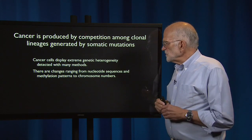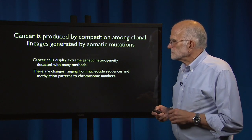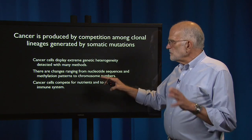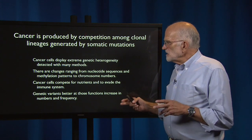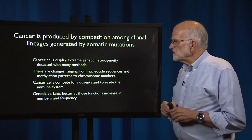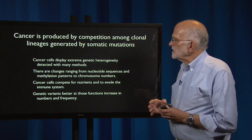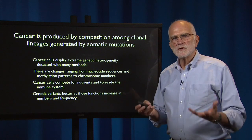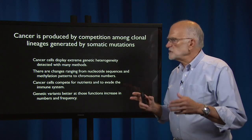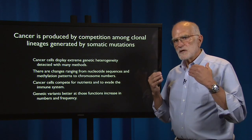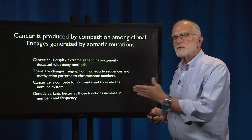Cancer is produced by competition among clonal lineages generated by somatic mutation, and these lineages are extremely genetically heterogeneous, as detected with many methods. There are changes that range from nucleotide sequences and methylation patterns to chromosome numbers. Cancer cells are competing for nutrients and to evade the immune system, and the genetic variants that are better at those functions increase in number and frequency. There's a huge amount of genetic diversity being generated, and that diversity is being trimmed and shaped by competition — a standard microevolutionary scenario where genetic variation is the fuel for a selection process.